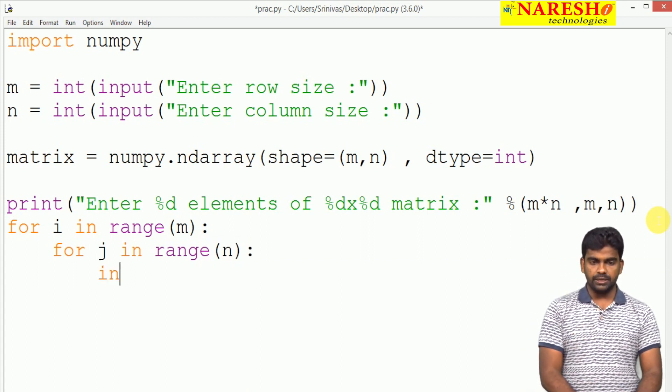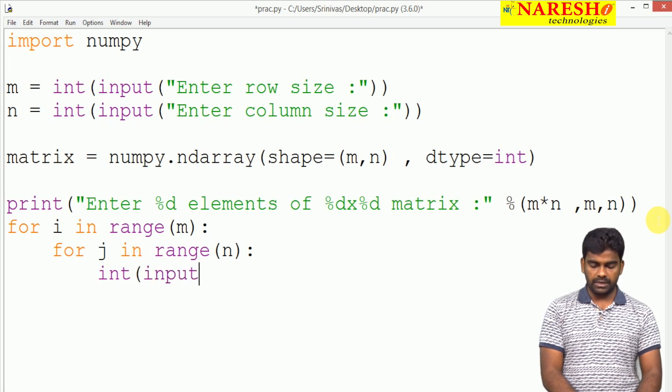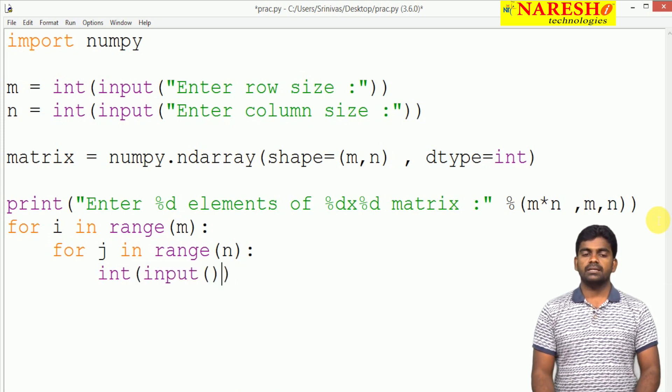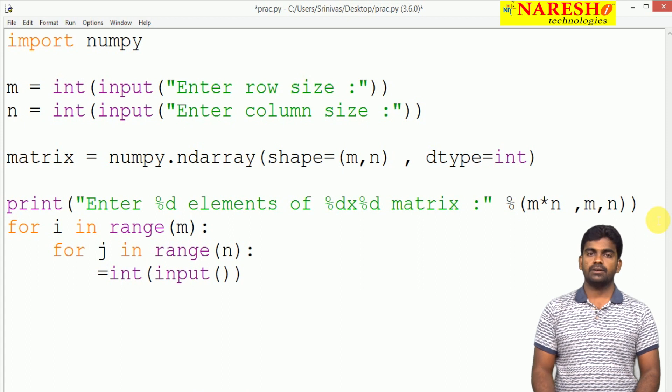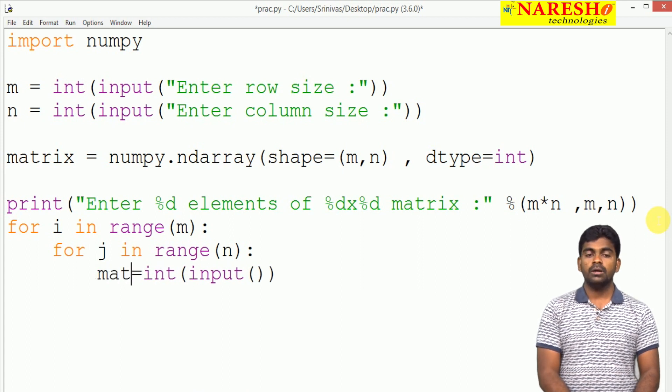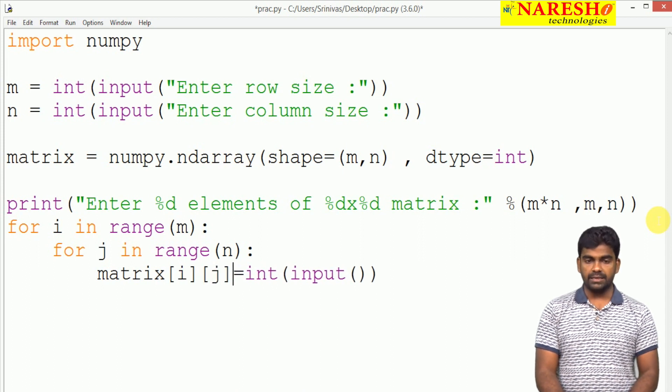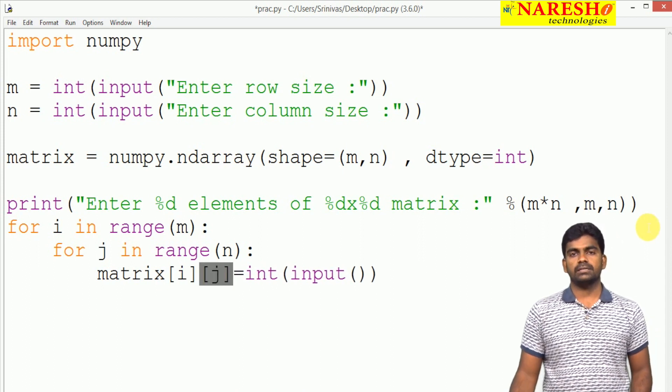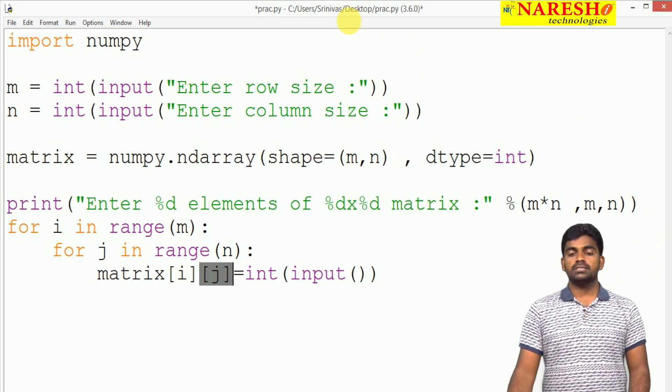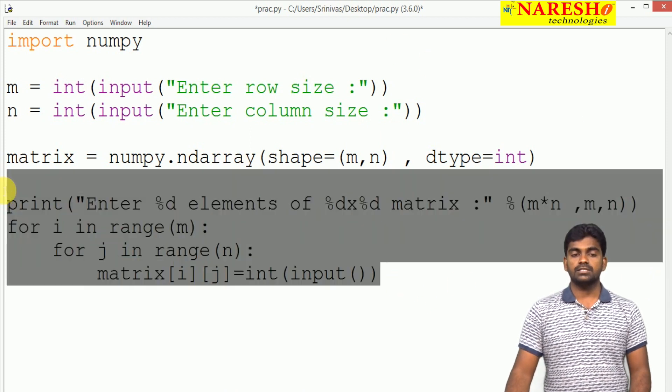Every time we are reading the input integer only, so we are converting and we are collecting into matrix of i j. Matrix of i j: 0 0, 0 1, 0 2 like this. This is for reading.